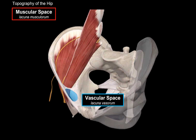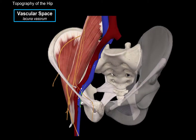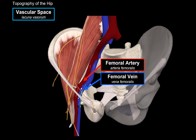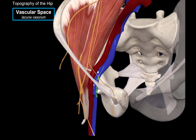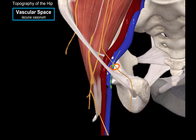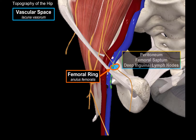The vascular space contains vasculature, including the femoral vein and the femoral artery, the deep inguinal lymph nodes, as well as the femoral branch of the genitofemoral nerve — only the femoral branch of this nerve passes through the canal. Around the region of the deep inguinal lymph nodes there is a ring called the femoral ring, which is normally closed off by structures such as the peritoneum, the femoral septum, and the deep inguinal lymph nodes themselves.